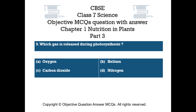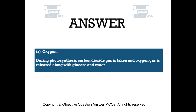Question number 9. Which gas is released during photosynthesis? Option A: Oxygen. Option B: Helium. Option C: Carbon dioxide. Option D: Nitrogen. The right answer is option A: Oxygen. During photosynthesis, carbon dioxide gas is taken in and oxygen gas is released along with glucose and water.